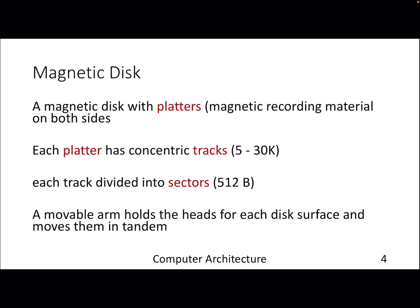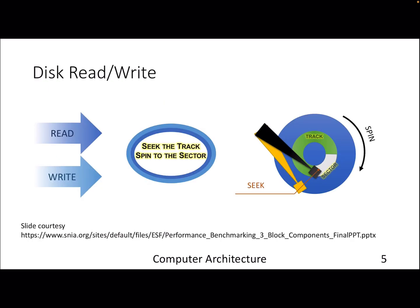So it's a collection of platters; each platter has tracks and tracks have sectors. There's a movable arm that holds the head for each disk surface. At a high level, to access data from the hard disk, you need to find a particular track, then go to a particular sector, and then transfer the data.